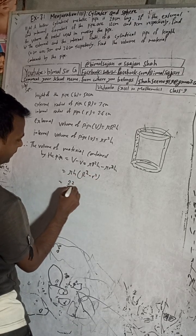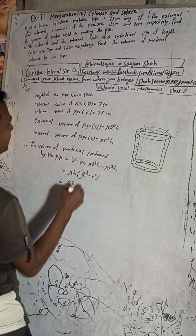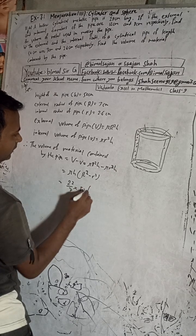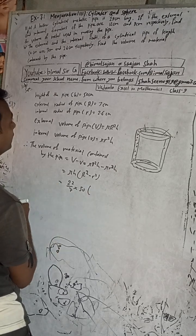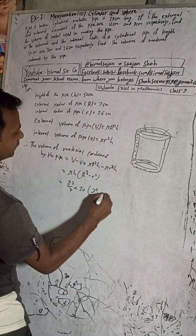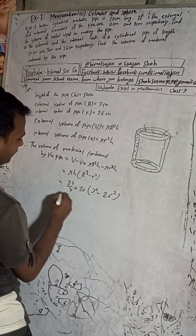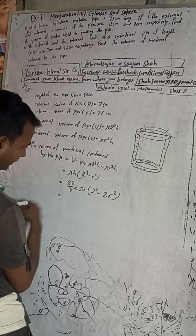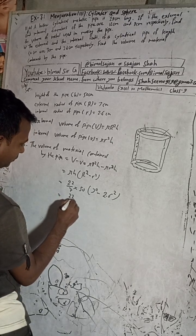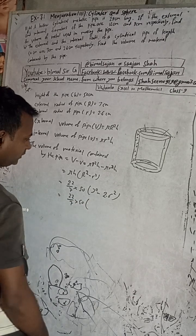So, pi value is 22 by 7, into h — height is 50 cm — into (capital R squared minus small r squared). Capital R is 3, so 3 squared, minus small r is 2.6, so 2.6 squared. This won't cancel, so I'll keep it as 22 by 7 into 50, and now I'll use the calculator.